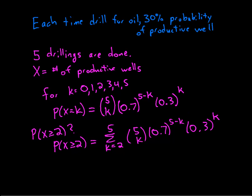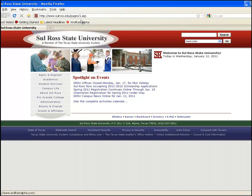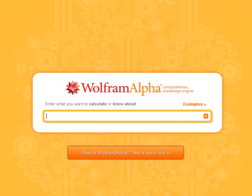Okay, so we'll go to Wolfram Alpha. And I want to enter in the sum of the binomial coefficient of five, actually I need brackets here, five comma k times 0.7 to the power of five minus k times 0.3 to the power of k. And I want to sum this from k equals 2 to k equals 5.